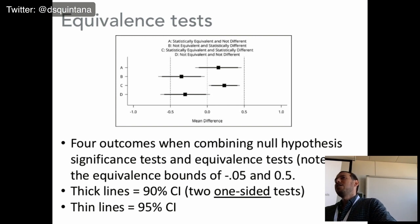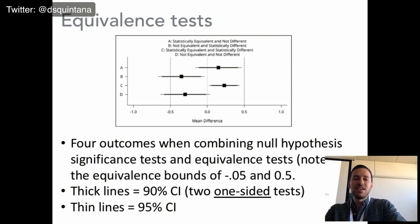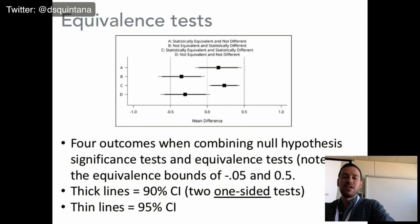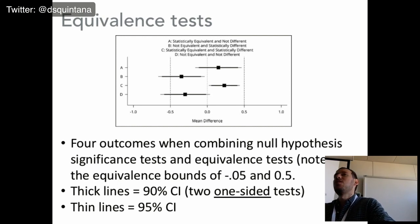When you're combining equivalence tests with traditional null hypothesis significance testing, there are four possible outcomes. The thick lines represent a 90% confidence interval, because you're performing two one-sided tests — that's why you use the 90% confidence interval. The thinner line represents your traditional 95% confidence interval. You can adjust these, but this is based on the typical 0.05 threshold.